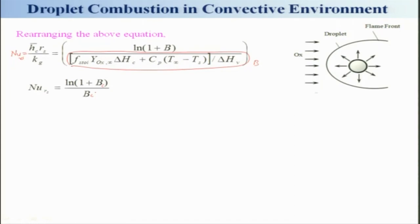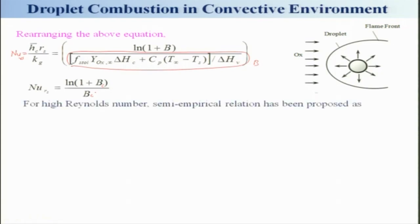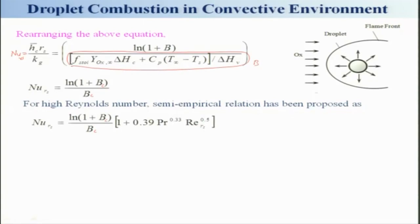This does not include the Reynolds number or the Prandtl number, although this is valid for what we have seen. So for high Reynolds number, we can plug in some relations from heat transfer into this and develop a semi-empirical relation, which has been proposed as: Nu = [ln(1 + B) / B] * [1 + 0.39 * Pr^0.33 * Re_rs^0.5]. This is generally valid and mimics the experimental data well.